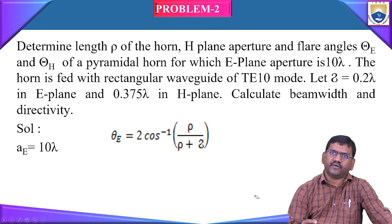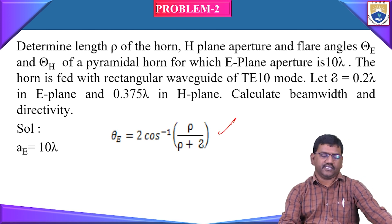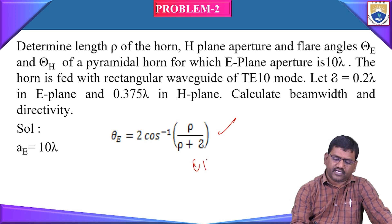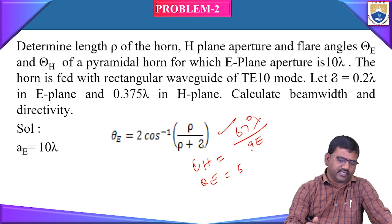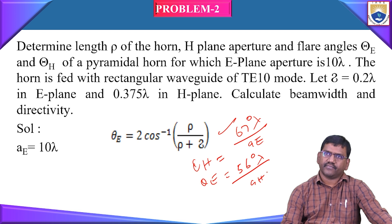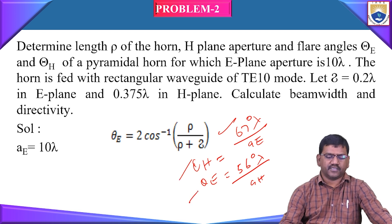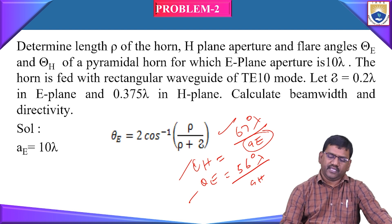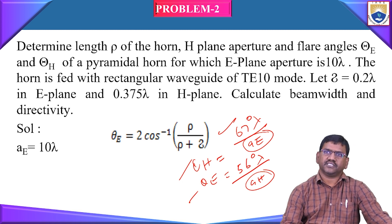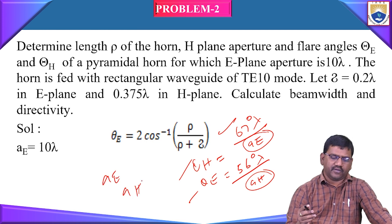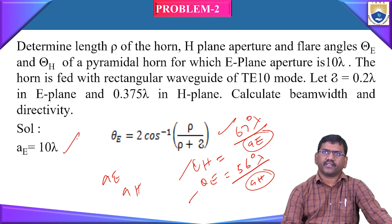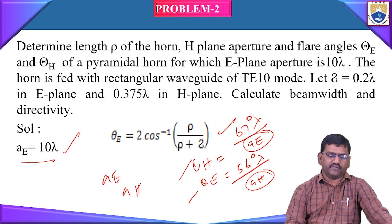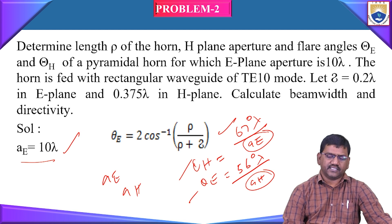For an optimum flare horn, theta_e is given by 2 cos⁻¹(ρ/(ρ+δ)). There are basic formulas: the half-power beamwidth in the H-plane is 67° × lambda / a_h, and theta_e = 56° × lambda / a_e. Here a_e is the height of the aperture in the E-plane and a_h in the H-plane. As per the given data, a_e = 10 lambda.